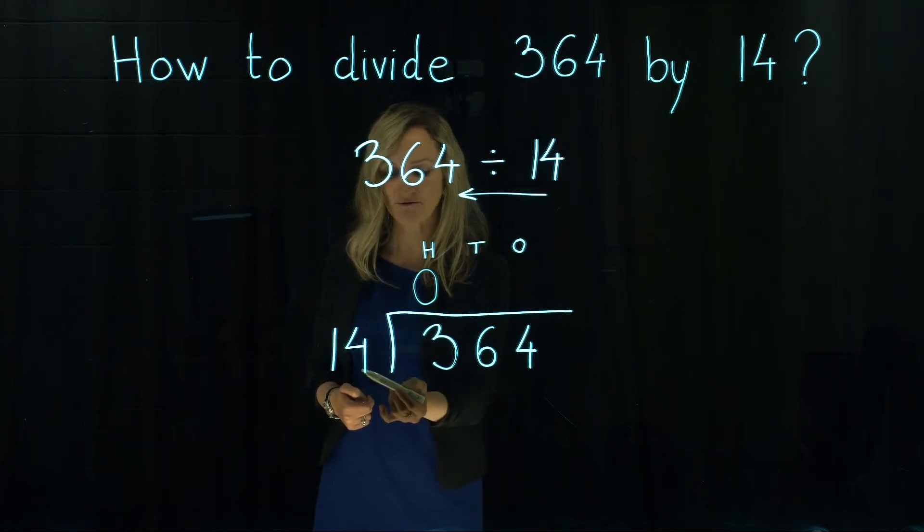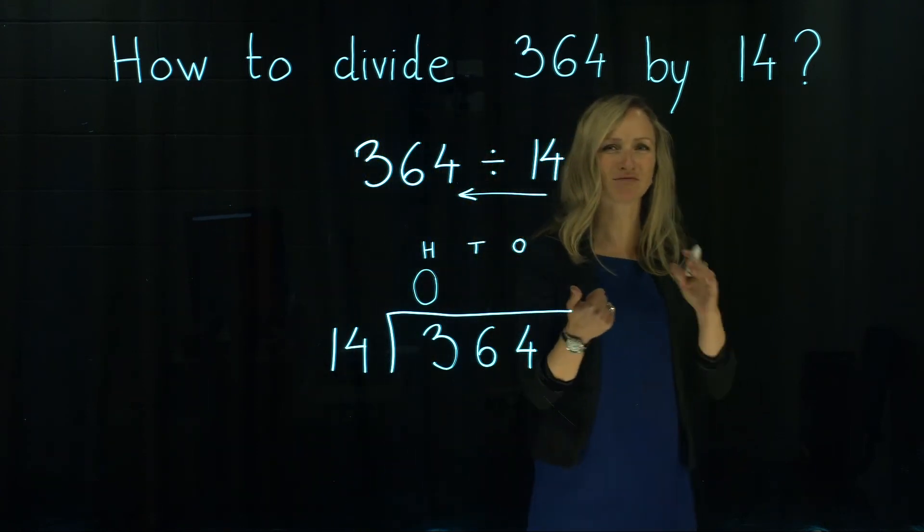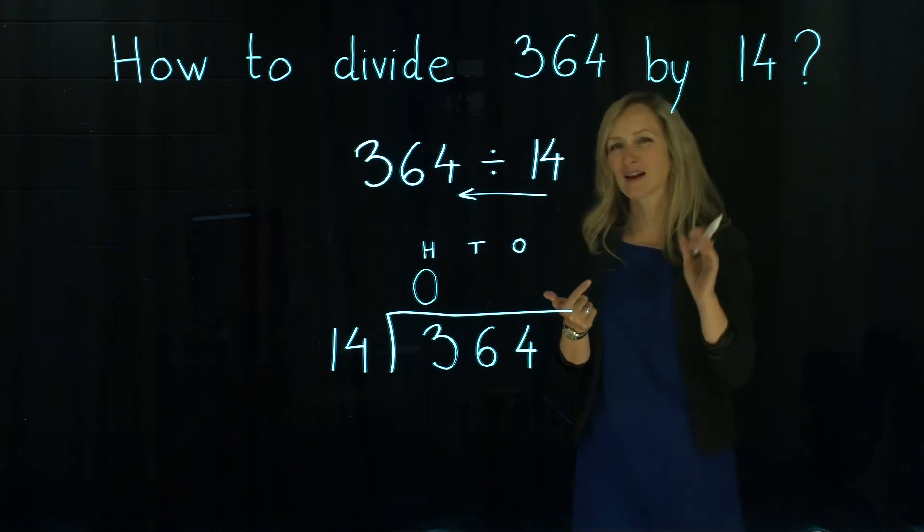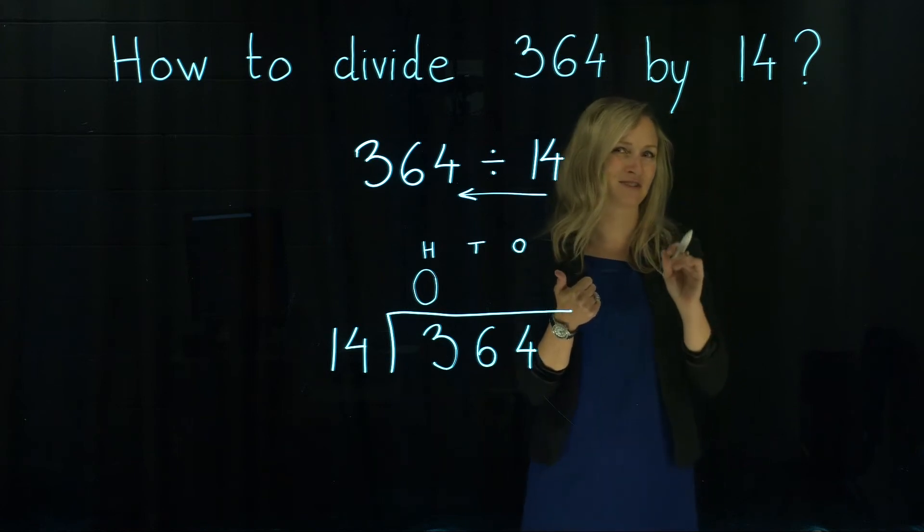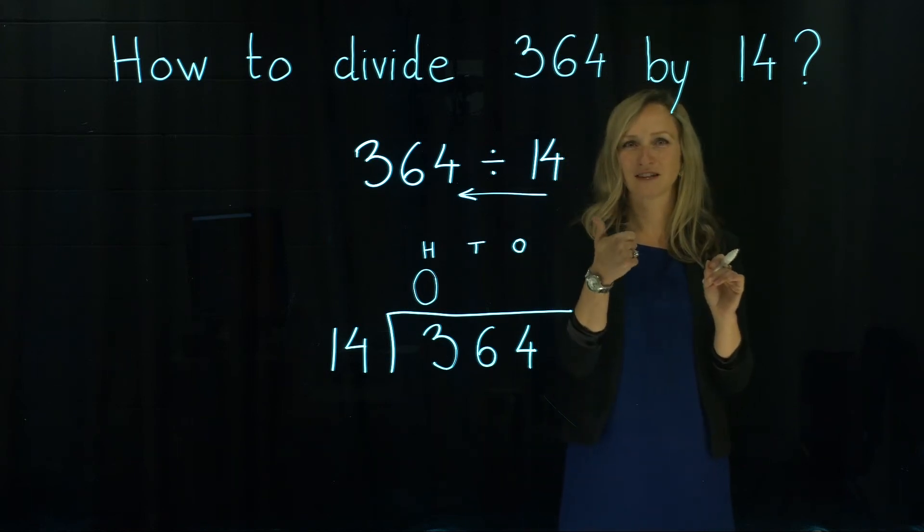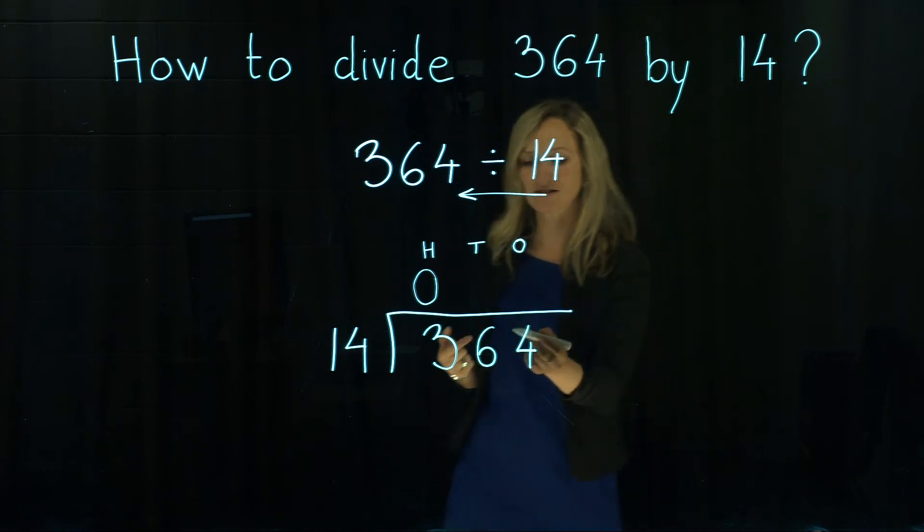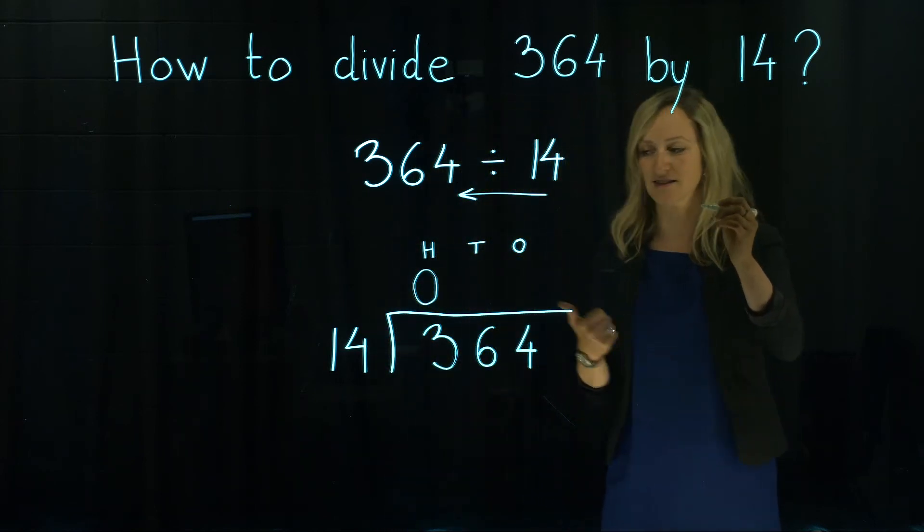how many times 14 goes into 36? Let's estimate. 14 is really close to 15, isn't it? And 36 is really close to 40. So 15, how many times goes into 40, for example? 15 plus 15 is 30 plus 15 is 45. 45 is too big. So maybe 14 goes twice into 36.